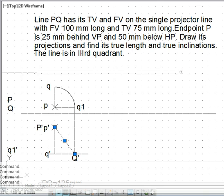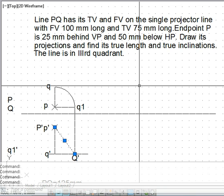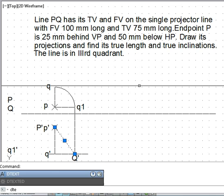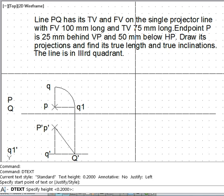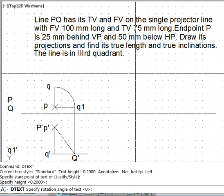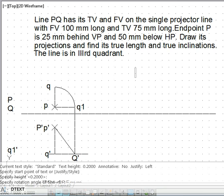So we can say that true length is 125 mm because 1.25 AutoCAD units and we have applied the scale factor. So we use the dtext command, enter point, and we write here the true length is equal to P dash Q dash and it is equal to 125 mm.